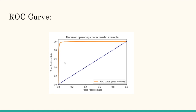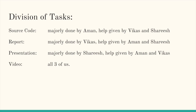The ROC curve shows us that the area under the curve is the result of prediction — how accurate our code is. We predicted the ROC curve and found that 99% of the results come out to be true.